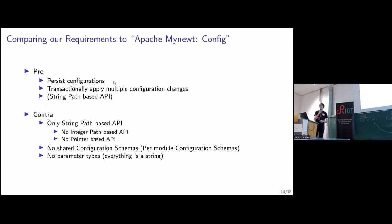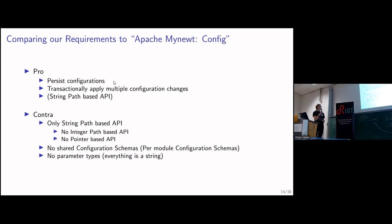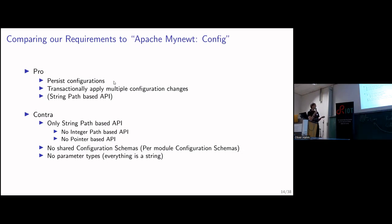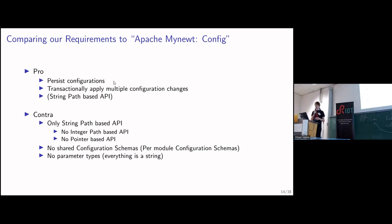Comparing it to our requirements: the good thing is it has configuration parameters, it has a commit function to conceptually apply changes, and it has a string path API. But the reasons why we don't fully like it: it only has a string path API — there's no pointer-based API, there's no interface API. Also, the configuration parameters are usually defined inside each module, so the configuration structure is not shared between similar drivers.